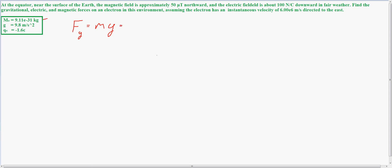Over here we have the mass and gravity, and so we have 9.11 times 10 to the negative 31st kilograms times 9.8 meters per second squared.